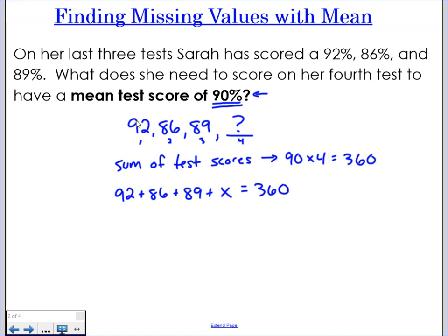So let's just treat this like an equation. Let's combine some like terms here and figure out, what is x? What does x need to be? Why don't I add the scores that I have? When I add these three values up, I would have 267 plus x equals 360.